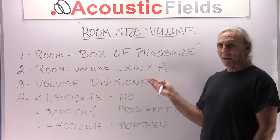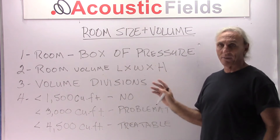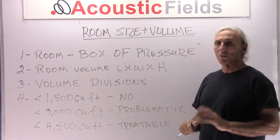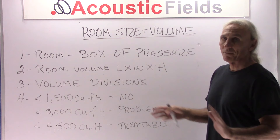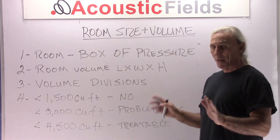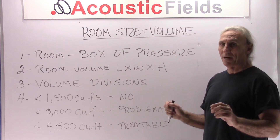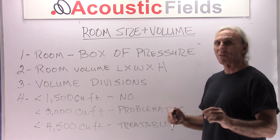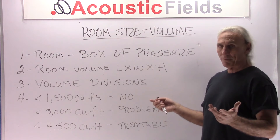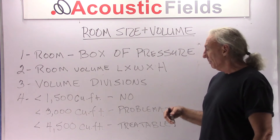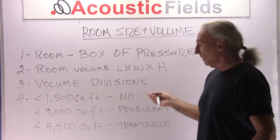So how do we calculate room volume? Length, width, height — a good simple formula. Take the length of your room, the width of your room, and the height of your room. That will give you your cubic volume — cubic feet of volume. If you're overseas, cubic metric volume. You just have to get this number in your head.